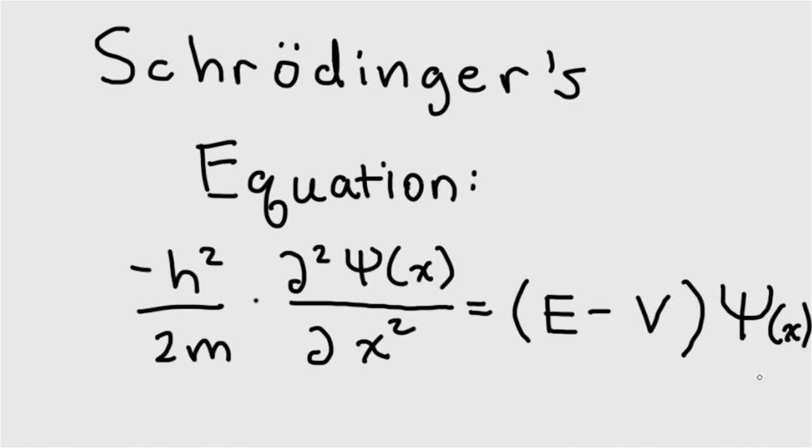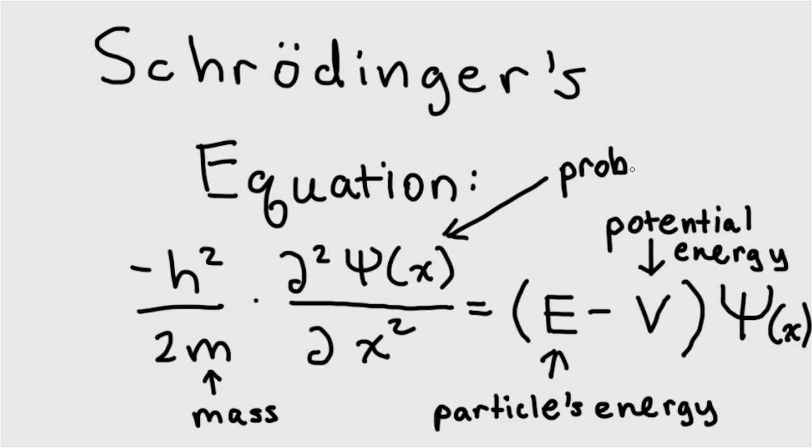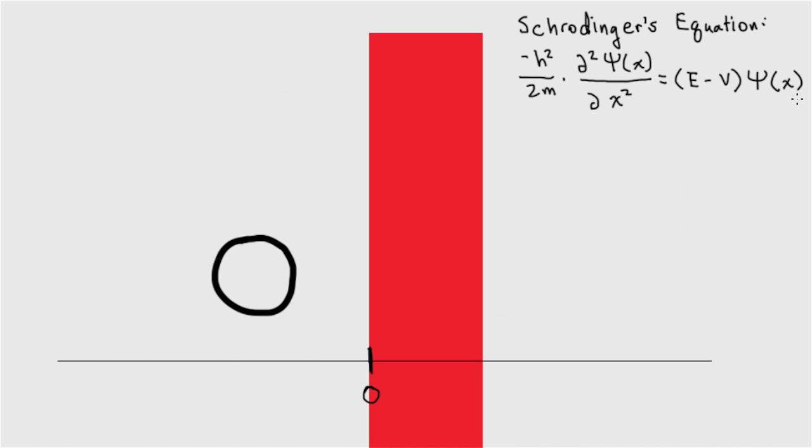Schrodinger's equation relates a particle's mass to its energy, the surrounding potential energy, and the probability of finding the particle at a particular x-position. We're interested in the last part, the probability of it being at a particular x-position, which is called the wave function. Remember, a function is some map that takes a value, in this case x, and returns another value, in this case the probability.